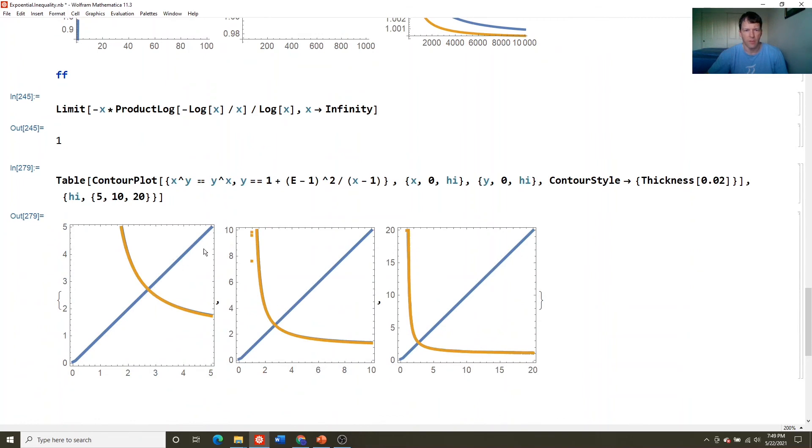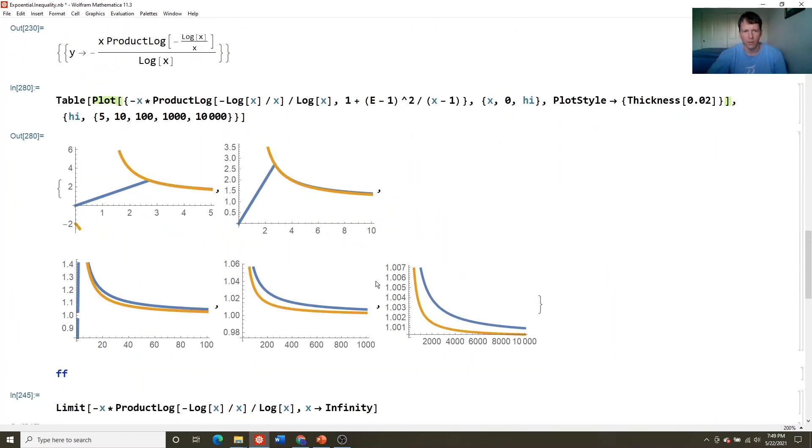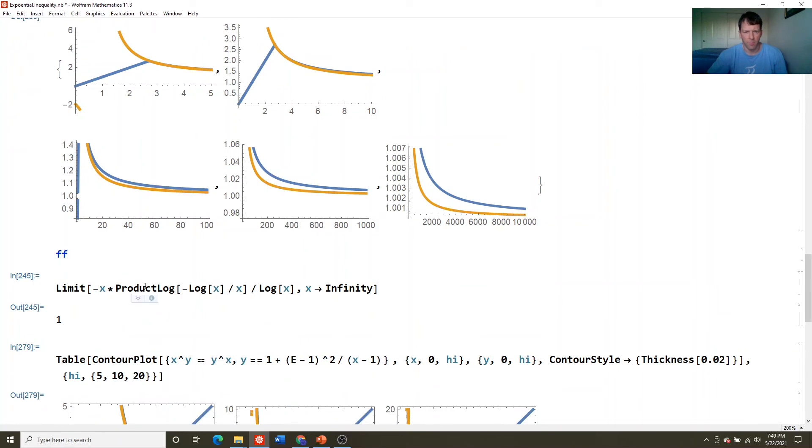And so it does a really good job. Like actually, if you zoom out, there's actually the orange curve and the blue curve are almost on top of each other. But here Mathematica is zooming in. And you can see that they're actually separated a little bit.